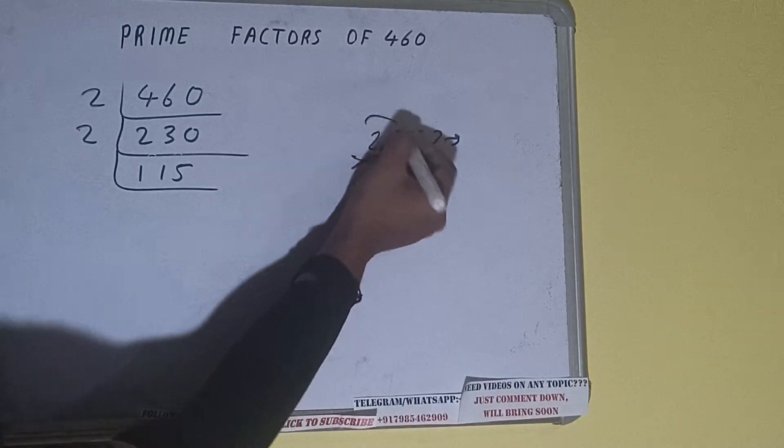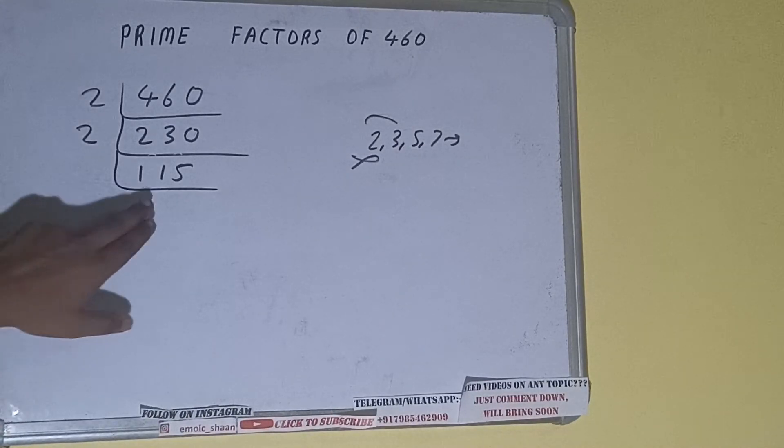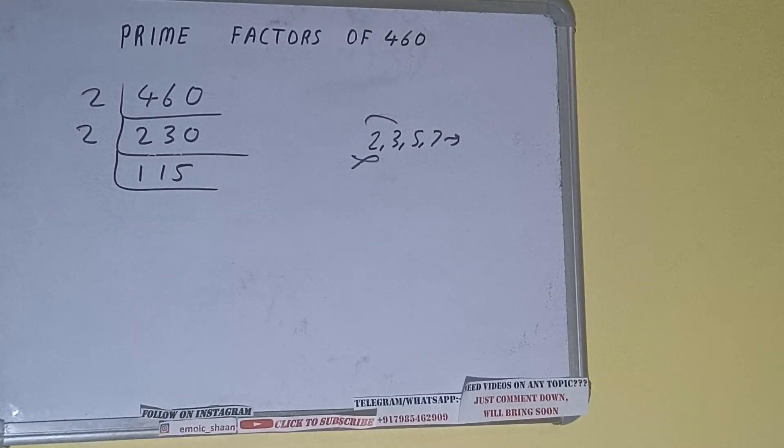So we'll check with the next lowest prime number that is 3. 1 plus 1 plus 5 equals 7. It is not divisible by 3.